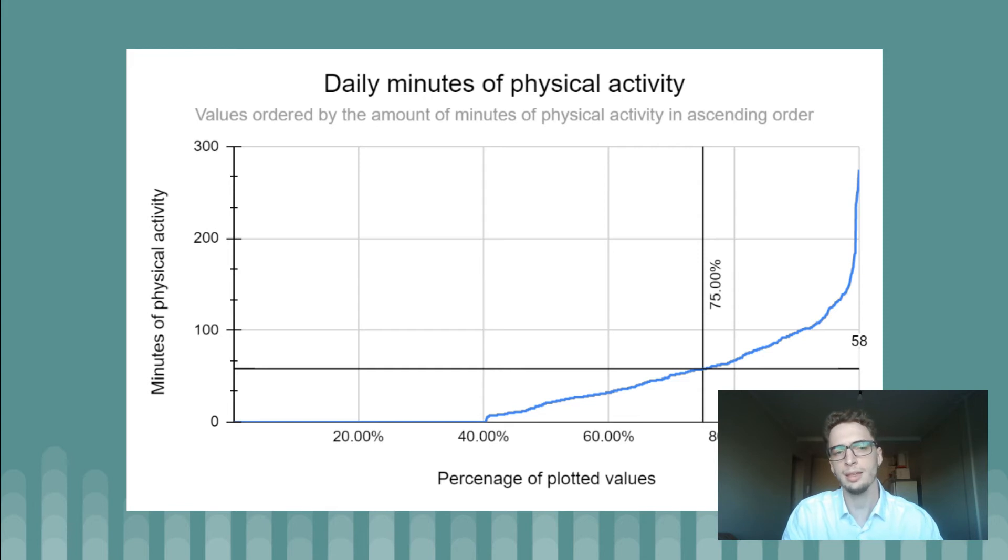Now I think it's better to go a little deeper into the degree of activity of the user. So first I organize the sample in a number of minutes of physical activity of every day in increasing order, meaning that the first day has the least minutes and the last day has the most.